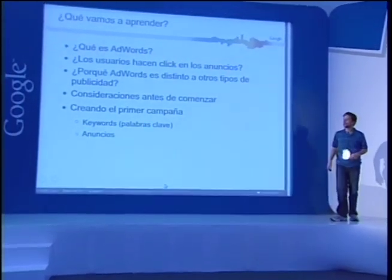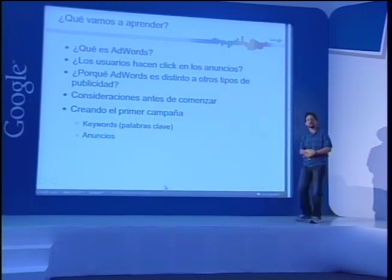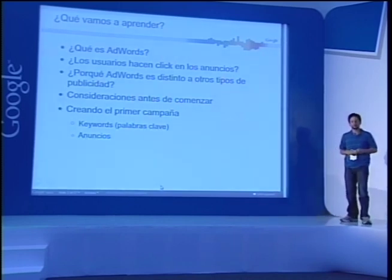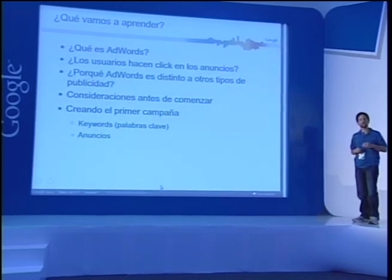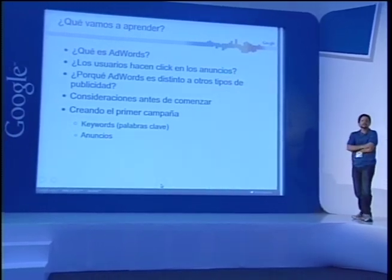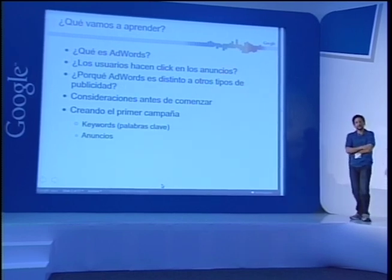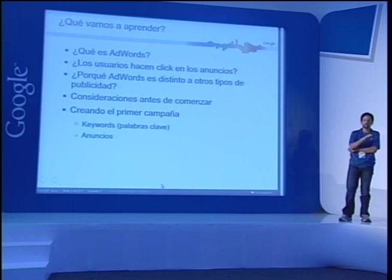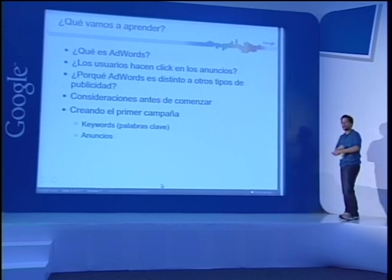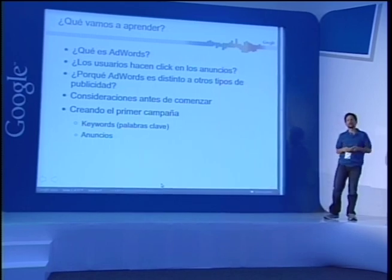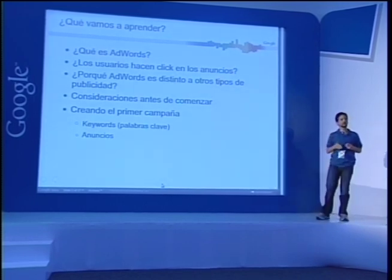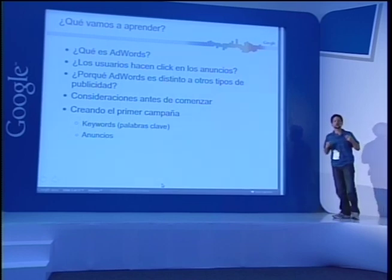Hoy vamos a ver qué es AdWords. Básicamente es un programa de publicidad que permite a los anunciantes o a cualquier persona anunciar o publicitar cualquier tipo de producto, servicio o mensaje dentro de Google y dentro de las propiedades o socios de Google. La gran ventaja es que nos permite anunciar justo cuando las personas están buscándolo. No es como un anuncio en el periódico que la gente puede ver o no. La característica principal es la relevancia con lo que el usuario está buscando.